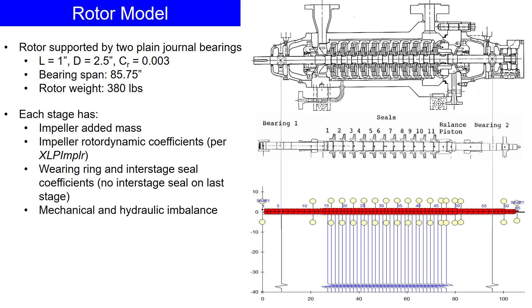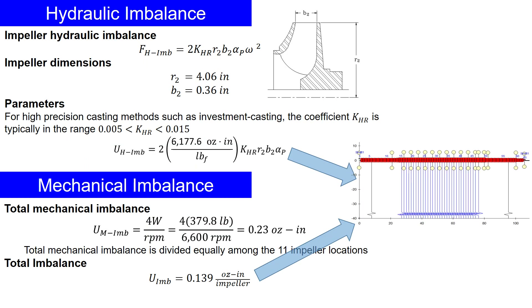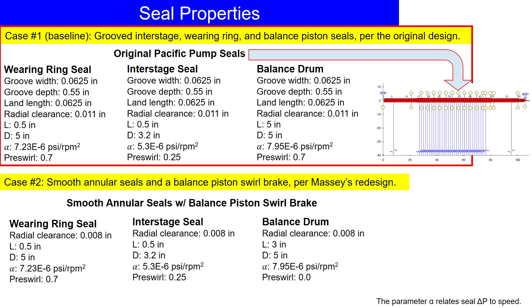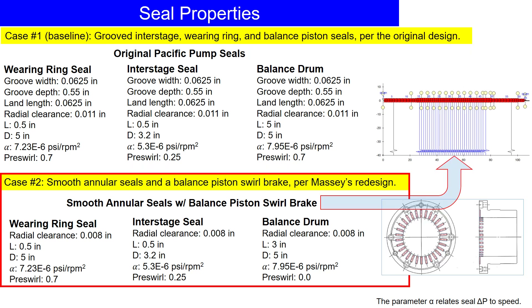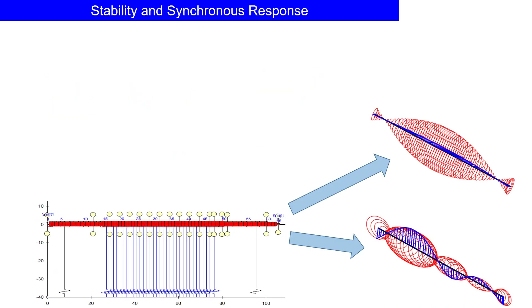Let's now perform a rotor dynamic analysis to understand the impact of the swirl brakes. The first step is to model the pump geometry into a finite element model and account for hydraulic and mechanical imbalances. By running a baseline case with the original seal, we can compare the results with a model that includes swirl brakes.